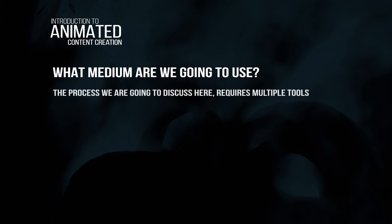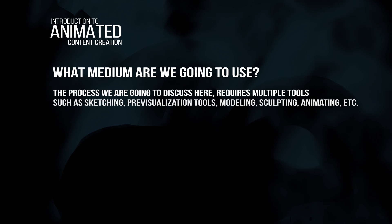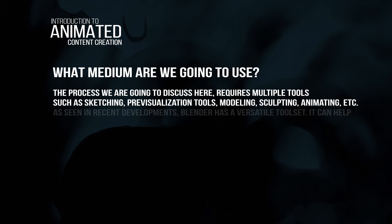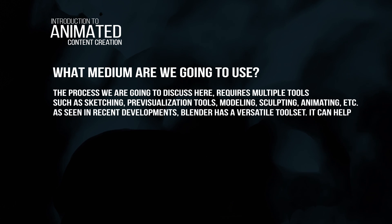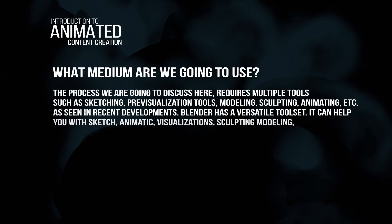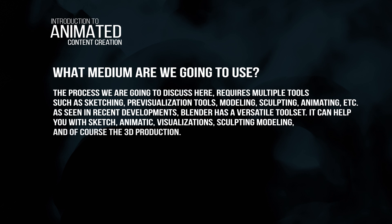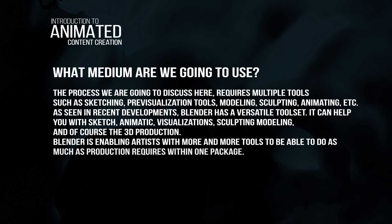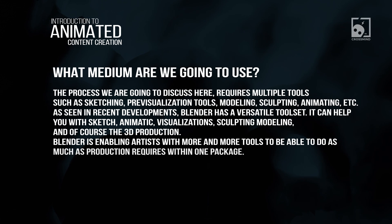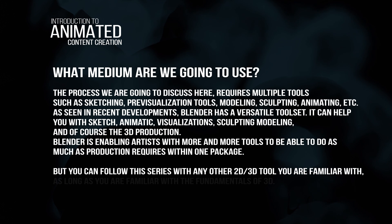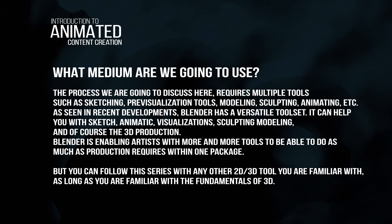The process we are going to discuss requires multiple tools such as sketching, pre-visualization, modeling, sculpting, animating, etc. As seen in recent developments, Blender has a versatile toolset that can help you with a sketch, animatic, easy pre-visualizations, sculpting, modeling and of course entire 3D production. Blender is enabling artists with more and more tools to do as much production as required within one package, blurring the lines between different mediums. But you can follow this series with any other 2D or 3D tools you are familiar with, as long as your fundamentals are clear.